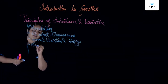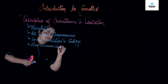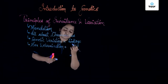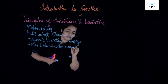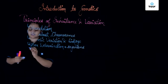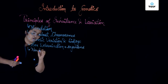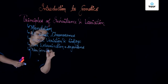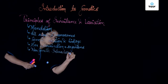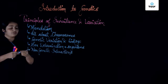Then we talk about sex determination, which is found in organisms other than humans — in various kinds of other organisms. We also talk about certain non-genetic interactions as well. We talk about all these concepts together in the principles of inheritance and variation.